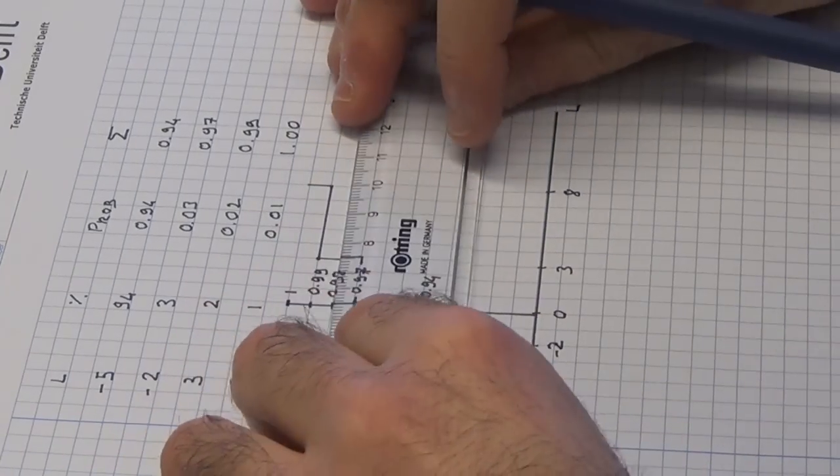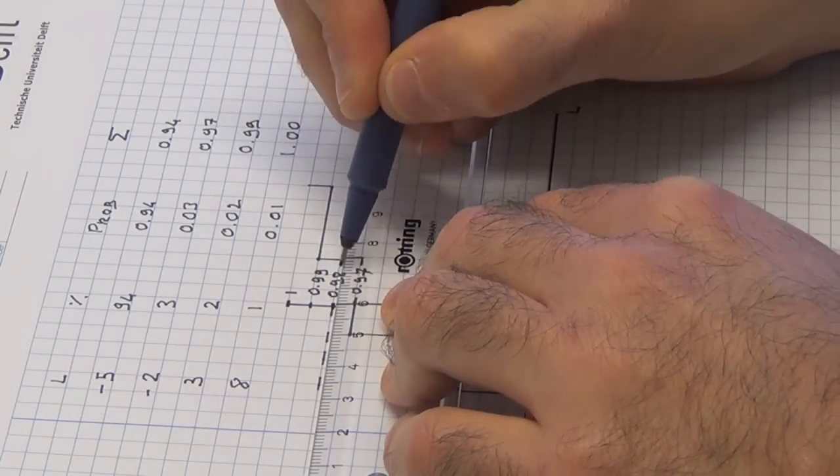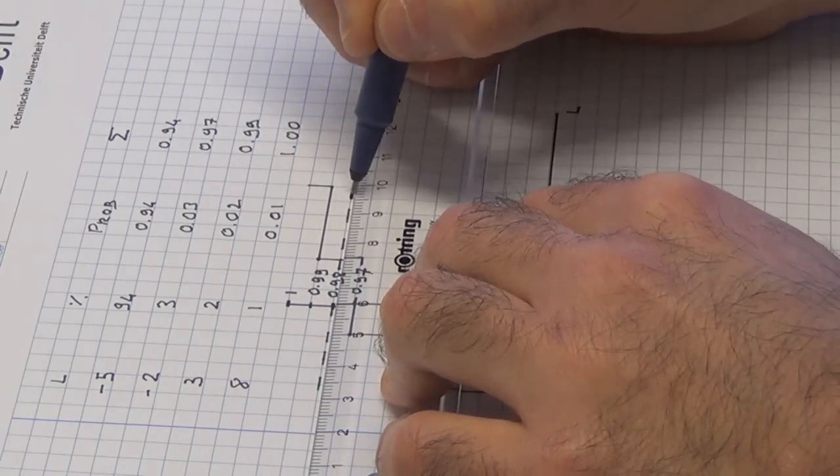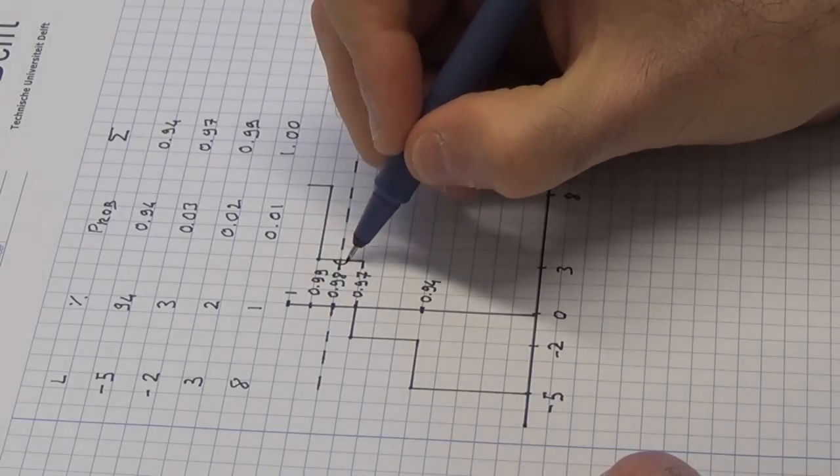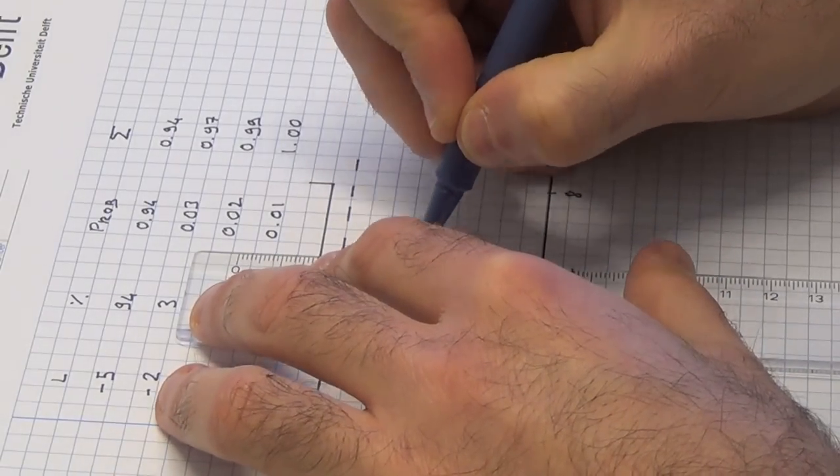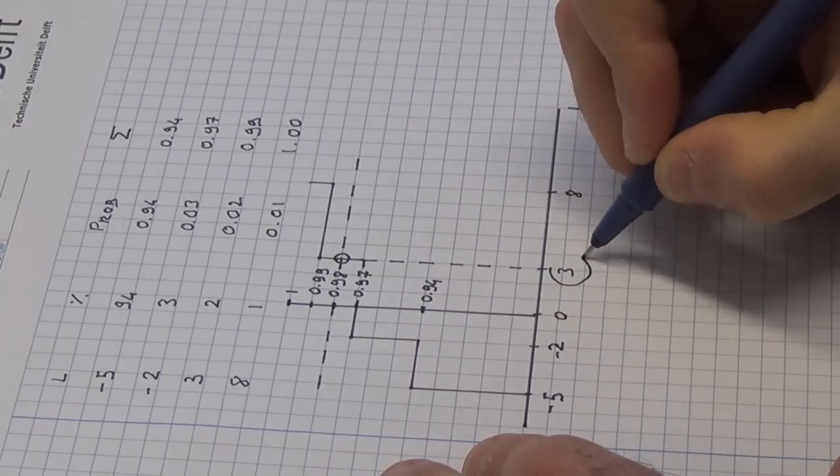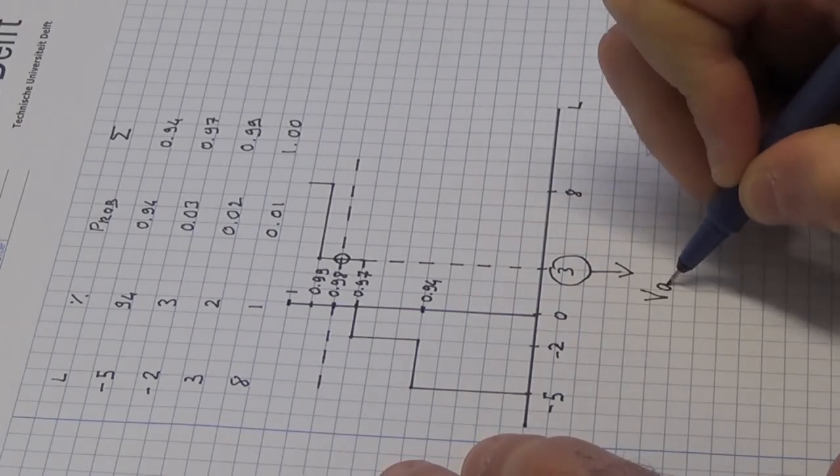But we can add it between 0.97 and 0.99. Now, let's draw a dotted horizontal line passing through 0.98. In which point does this line cross the empirical cumulative distribution function? Here. And this point corresponds to a loss of 3. This is our 0.98 VaR. Fine.